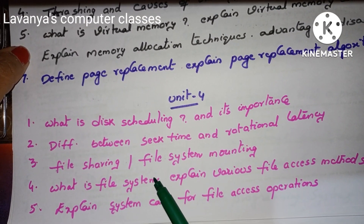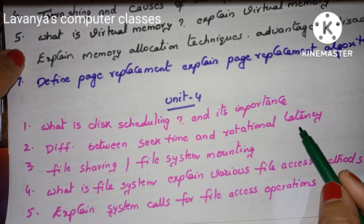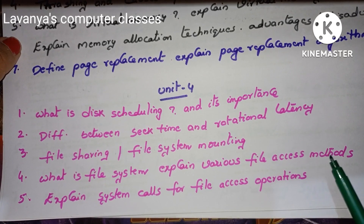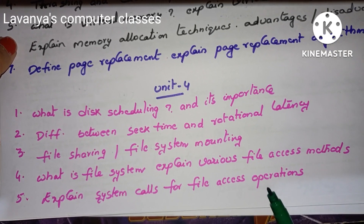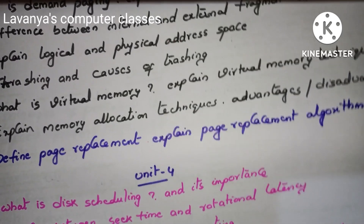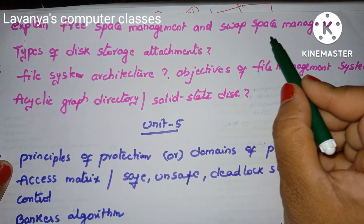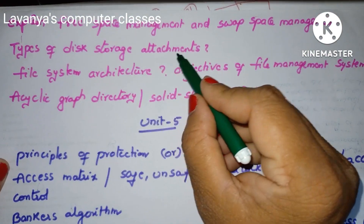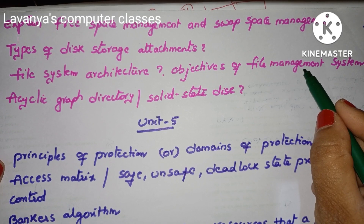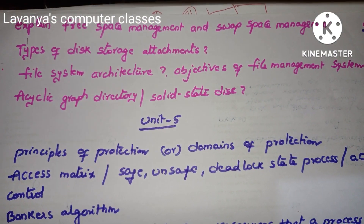Unit 4 important questions: what is disk scheduling and its importance? Difference between seek time and rotational latency. Explain file sharing or file system mounting. What is file system? Explain various file access methods — file access methods also appear in other subjects like DBMS. Explain system calls for file access operations. Explain free space management and swap space management — important question. Types of disk storage attachment. What is file system architecture? Objectives of file management system. Explain acyclic graph directory or explain solid state disk. These are the important questions in unit 4.